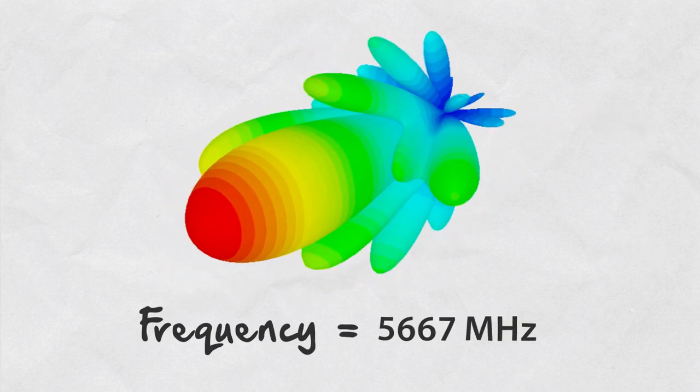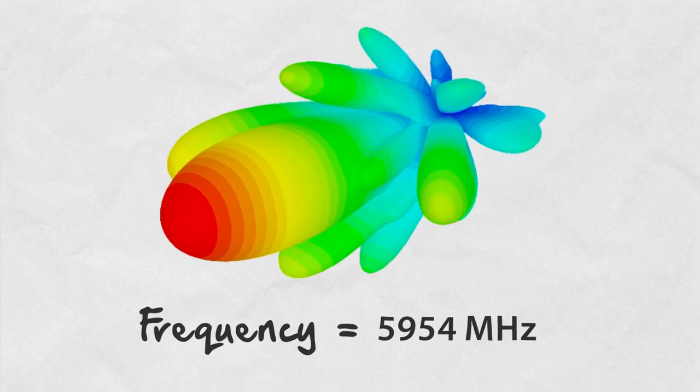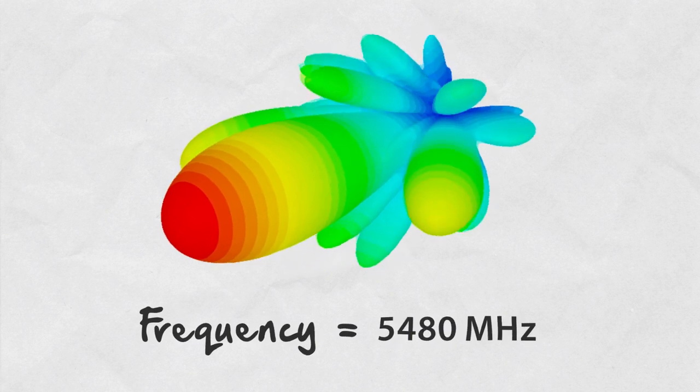On top of that, the size of the side lobes changes with frequency, which degrades the practical value of front-to-back ratio as a measure of side lobe performance even more.